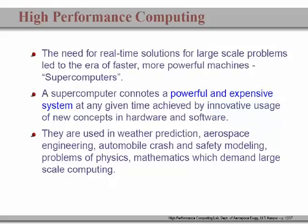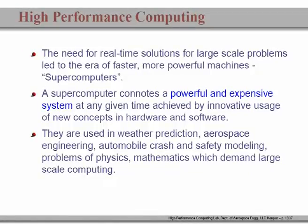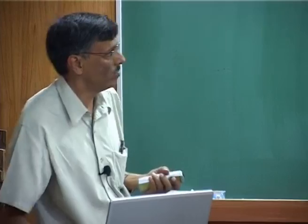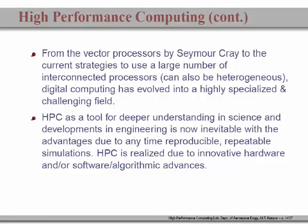These machines are used for weather prediction, aerospace engineering, designing new cars, crash worthiness and safety aspects, and any problem in physics and mathematics requiring large-scale computing. Apart from benchmark numbers, what really distinguishes high-performance computing machines from others? It all began with Seymour Cray's idea of a vector computer — if you have an unknown array, you break it down into vectors and process them as vectors. That is how it all began with the 1976 machine.